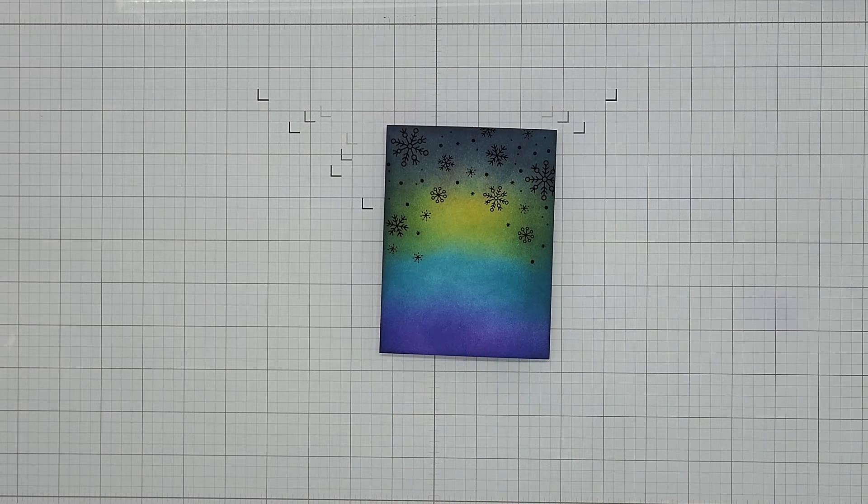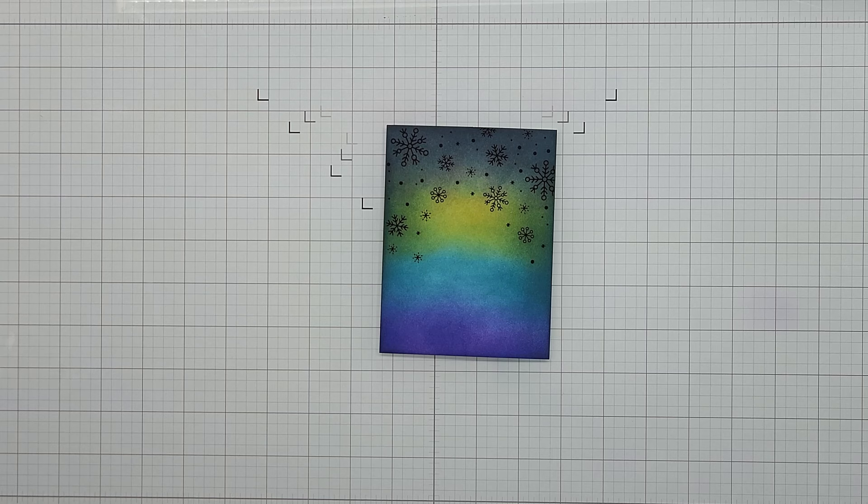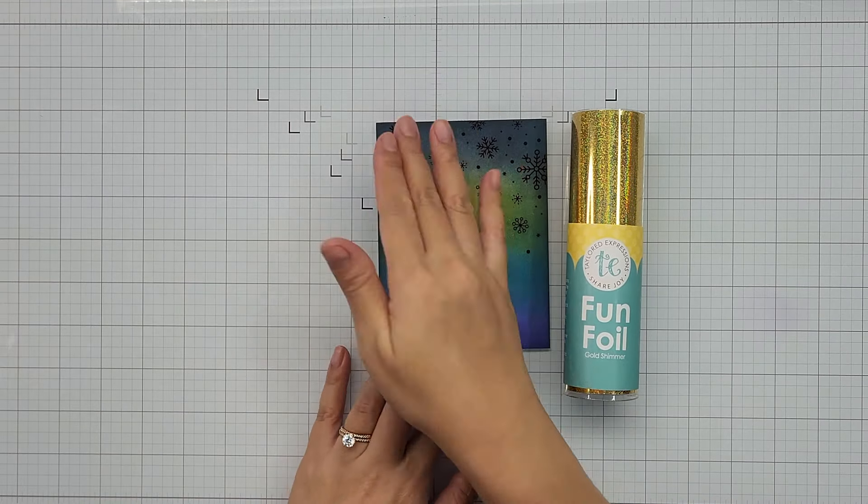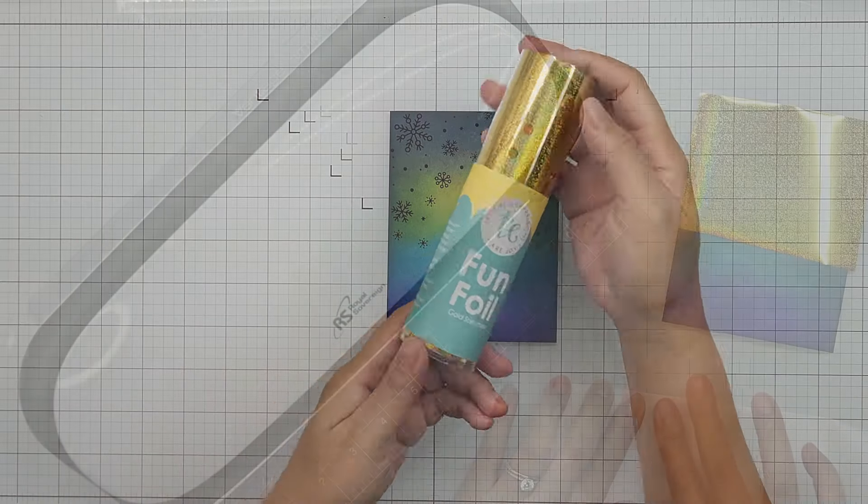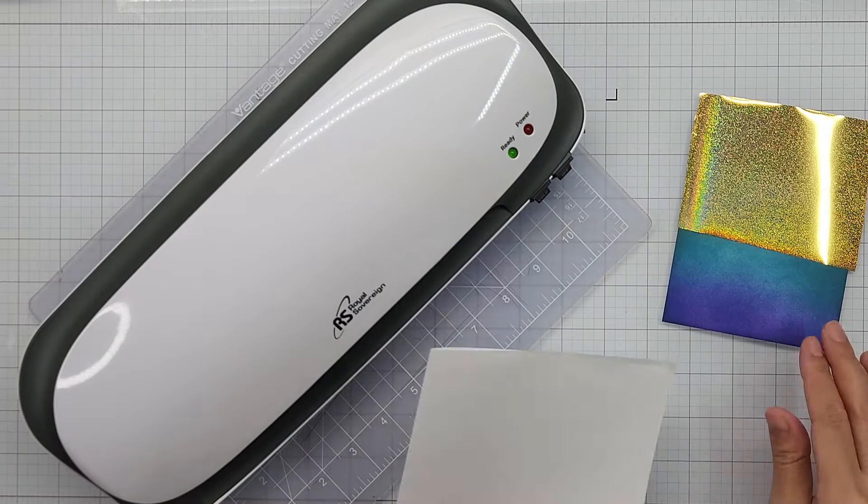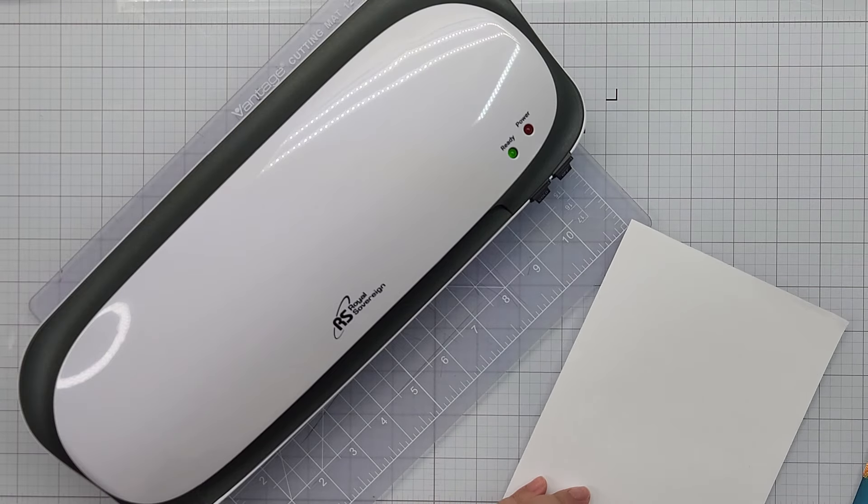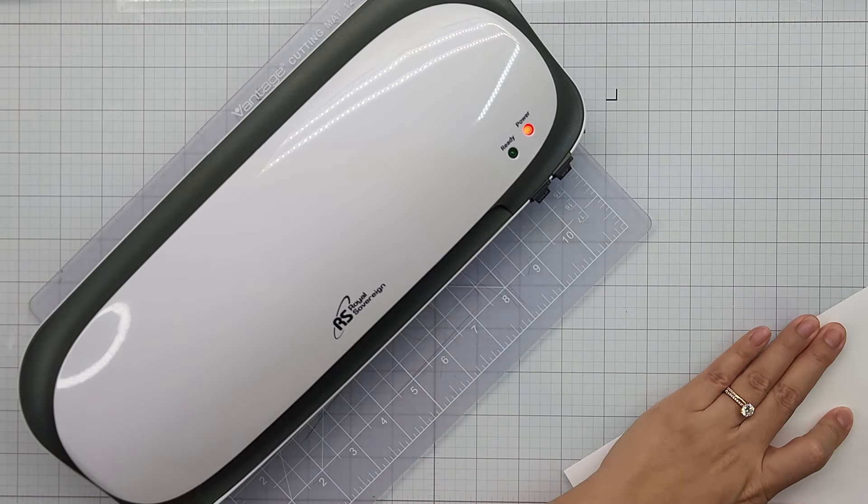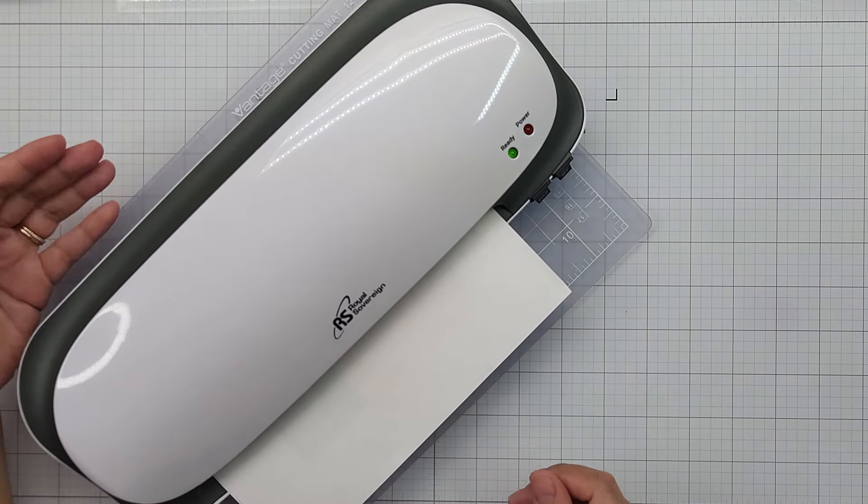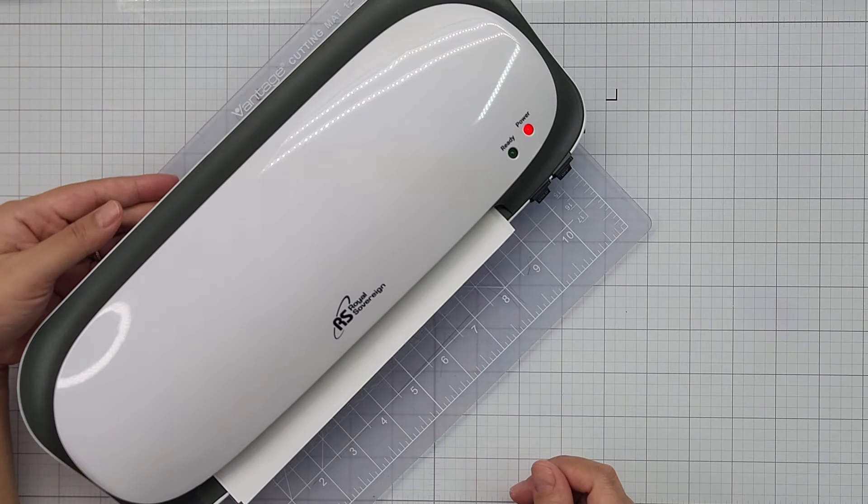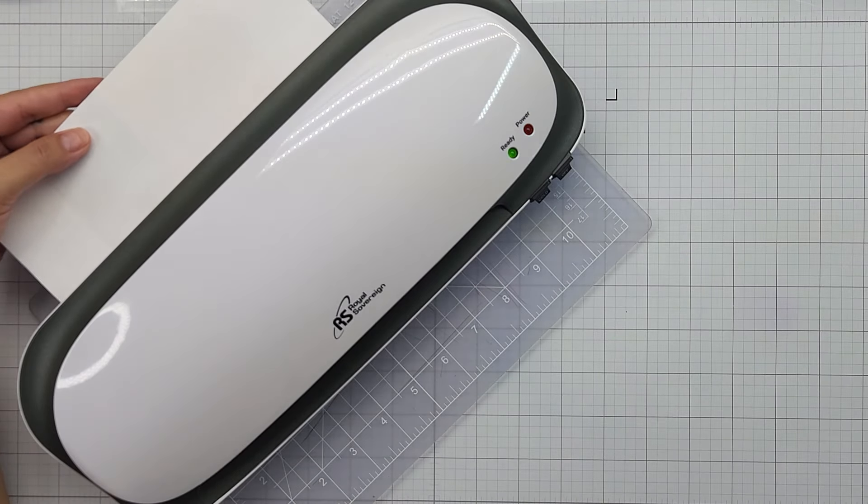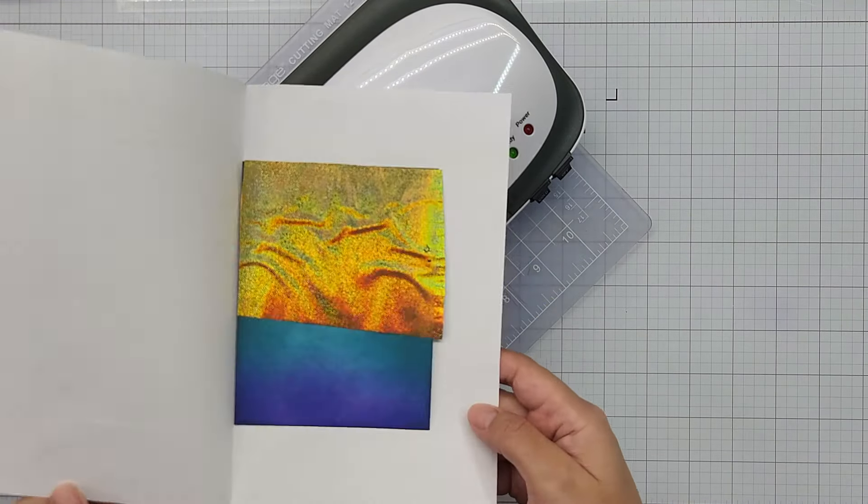So now it's foiling time. I don't have a Minc machine, but I do have a laminator. I am going to foil my Foil It panel with my laminator machine. I trimmed off a sheet of Fun Foil down to fit the area that I want to foil. With my laminator machine, it's ready to go once the green light turns on. I place my Foil It panel with Fun Foil between a sheet of copy paper that I folded in half. I ran that through the laminator a few times to make sure that the heat transferred thoroughly. Then I pulled the foil off. It's not a perfect transfer, but it's a great way to use what you have.